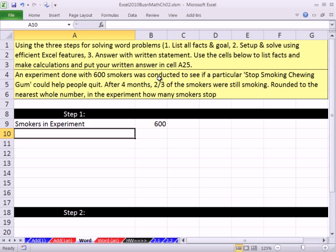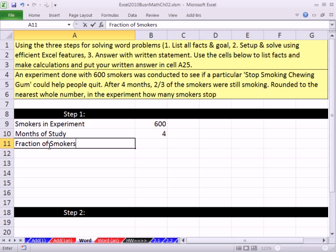After four months - now I'm going to put this in here, but this may or may not be helpful. That's the way we extract every little detail, look at it all here, and maybe we can figure it out. If we don't need it, we won't use it. After four months, 2/3 of the smokers were still smoking. So I'm going to put something like fraction of smokers still smoking. And I'm going to do a little trick. I want to see it as a fraction, so equals 2 divided by 3, Control Enter.